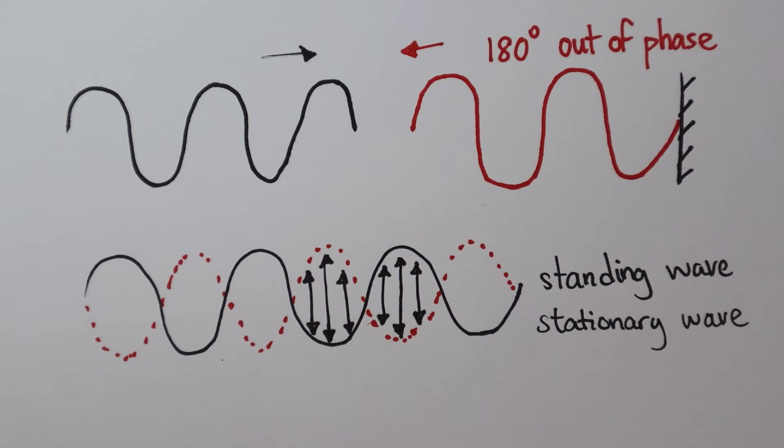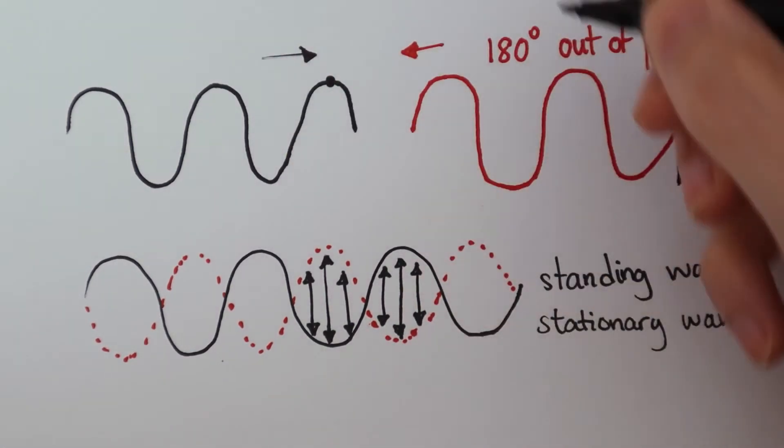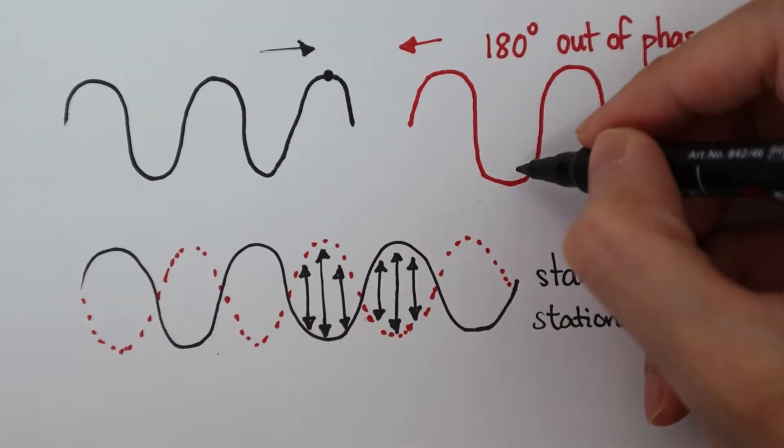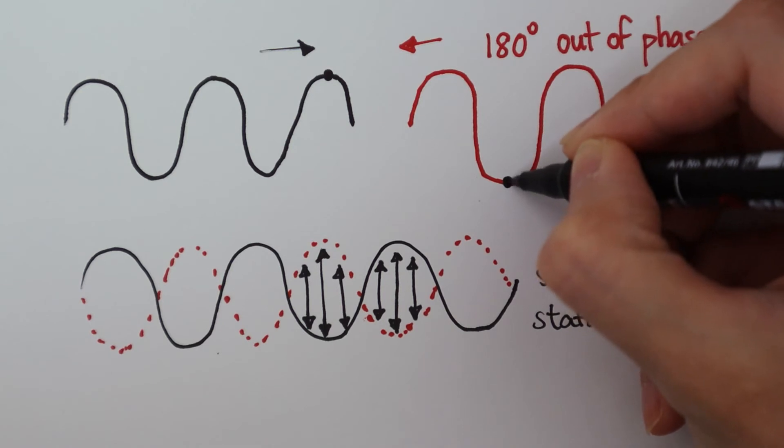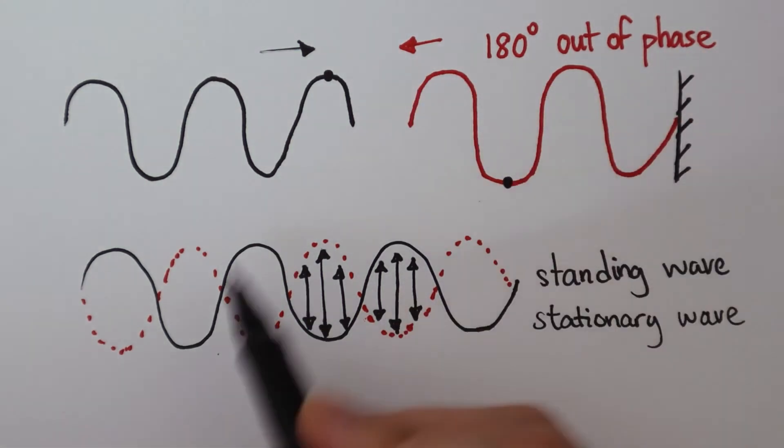Since standing waves cannot propagate through space, there is no net transfer of energy. Think about how interference works. If we have a maximum particle displacement here and minimum displacement here, they cancel out to give zero disturbance in the resultant wave.